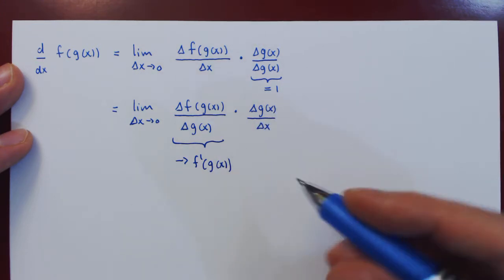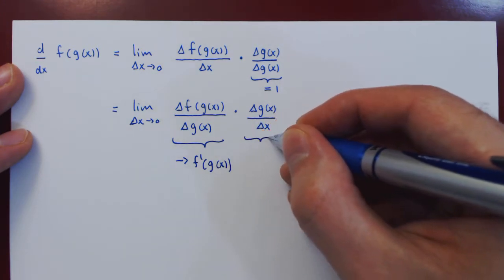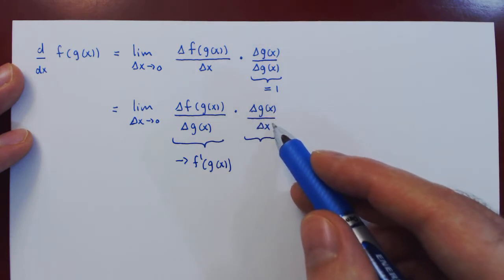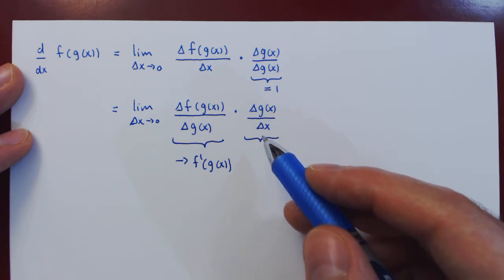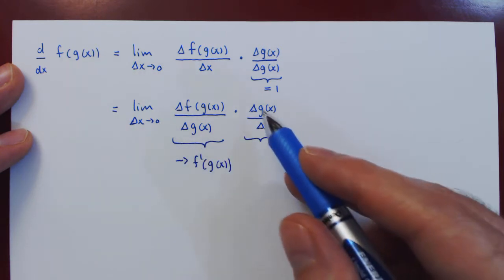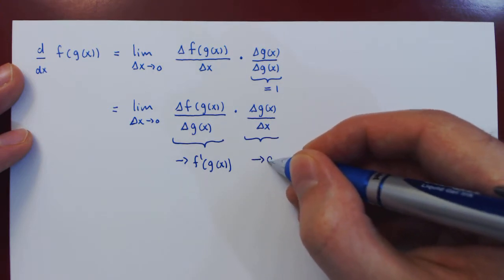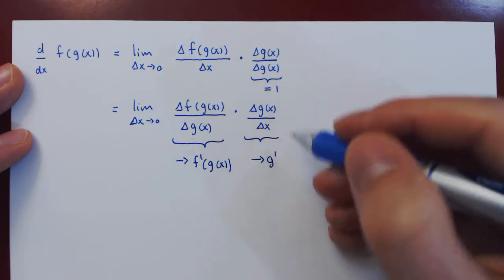And the second fraction is now a change in the function g around x, divided by a change in x. So as delta x approaches 0, this will give us the slope of the function g in the limit around the point x.